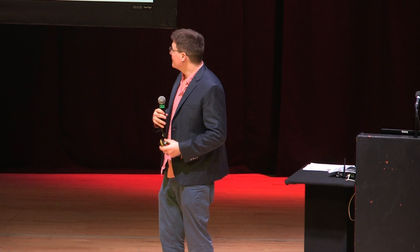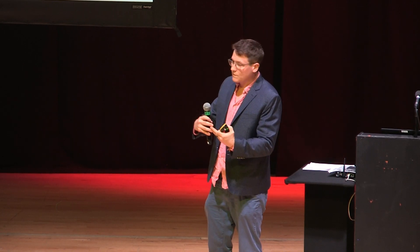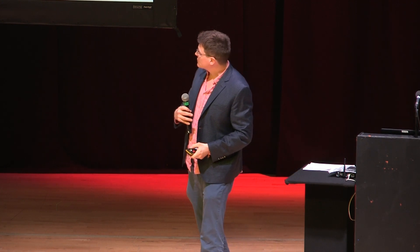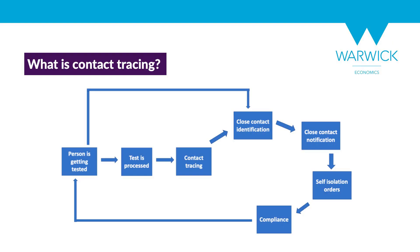This is where life throws us what we call natural experiments — just like the Eat Out to Help Out scheme was a natural experiment encouraging eating out using taxpayer money. We have another natural experiment here that resulted from an elimination of contact tracing that happened by chance through an IT error.